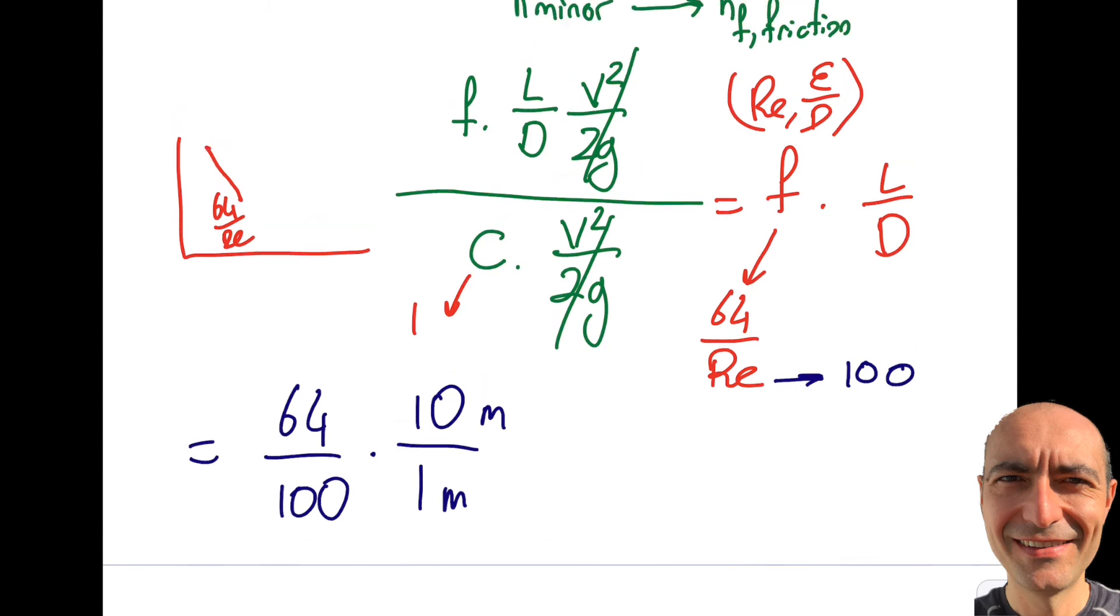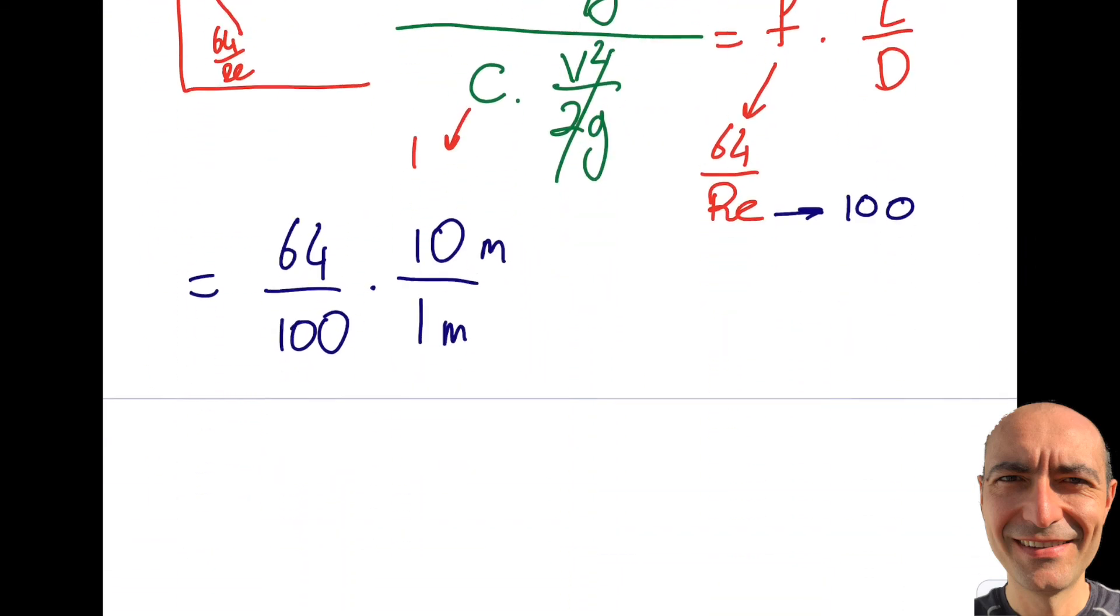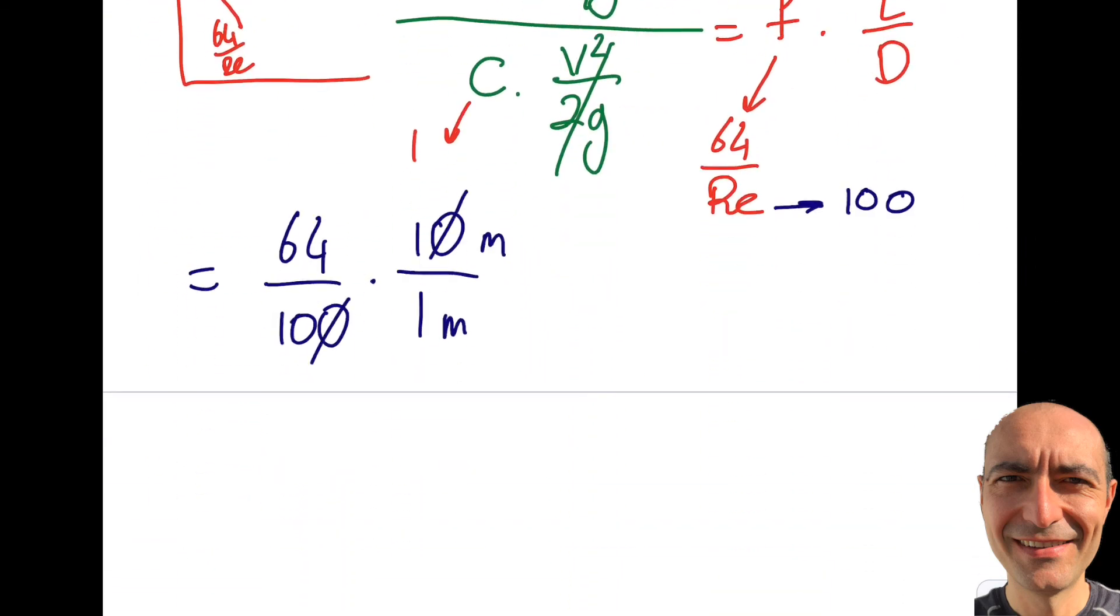That is unitless. That is F. It says 1 meter diameter and 10 meter length. So we're good. So when I do that you can see this cancels, 64 divided by 10 is 6.4.